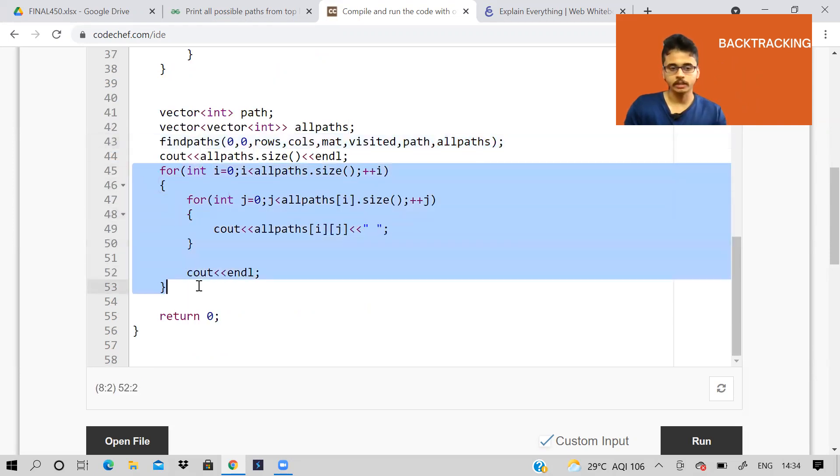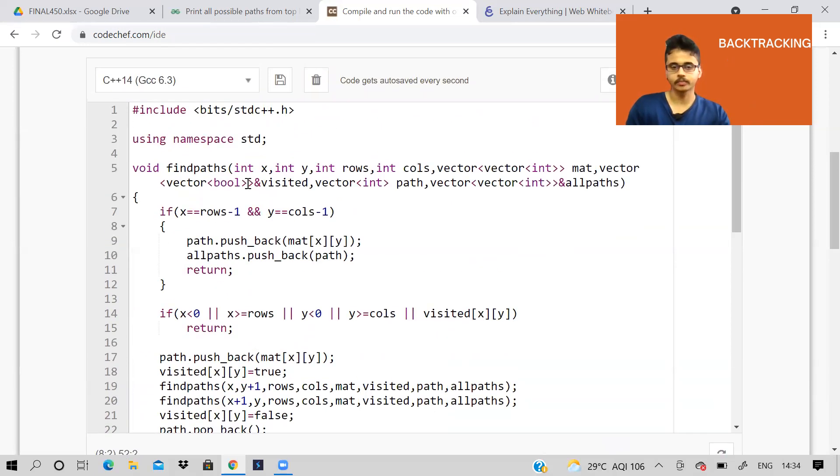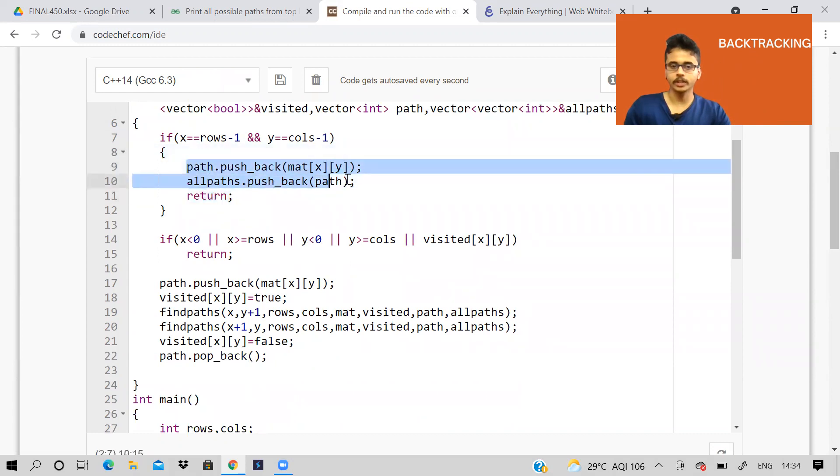But what is this function? What is it doing here? See, if X is equal to rows minus 1 and Y is equal to columns minus 1, we have reached the last cell. When we reach the last cell, we will store that value in our path as well as store the path in all paths, and we will return. We won't do anything else.